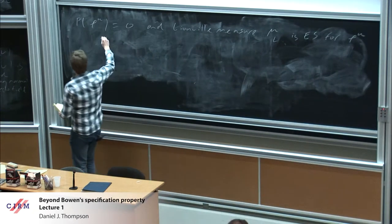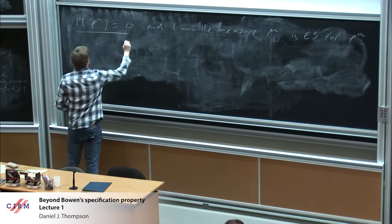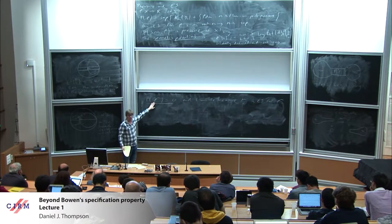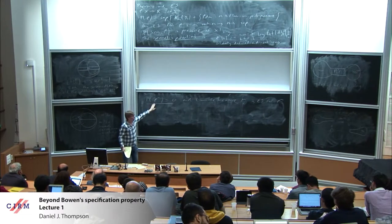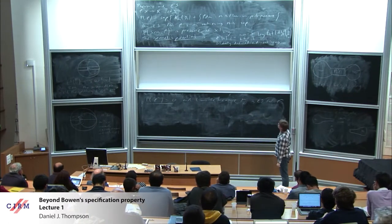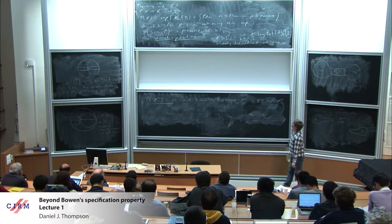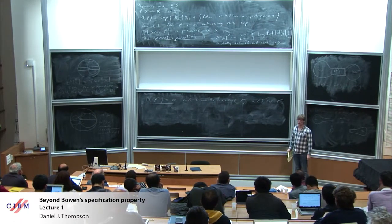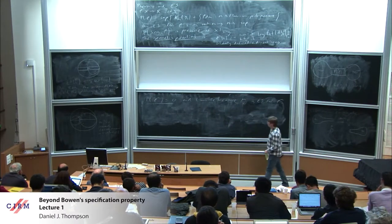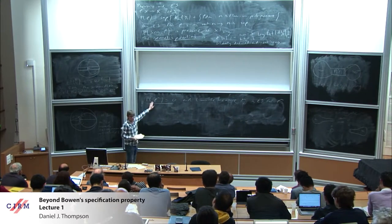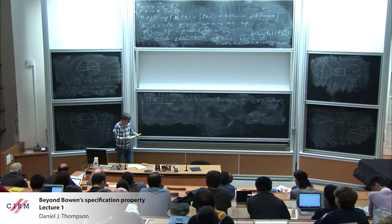This is essentially a slick repackaging of the Ruelle–Margulis inequality and the Pesin entropy formula. The integral of the geometric potential is minus the sum of the positive Lyapunov exponents, and the minus sign convention is chosen so that we get the formula P(phi^u) = 0.